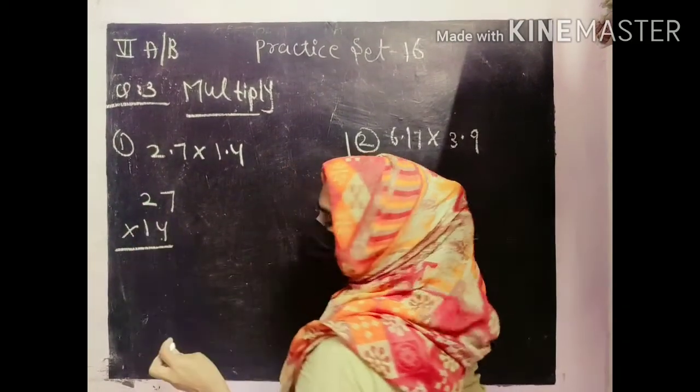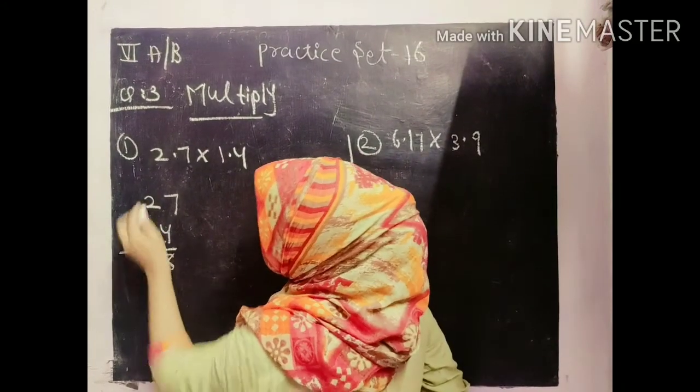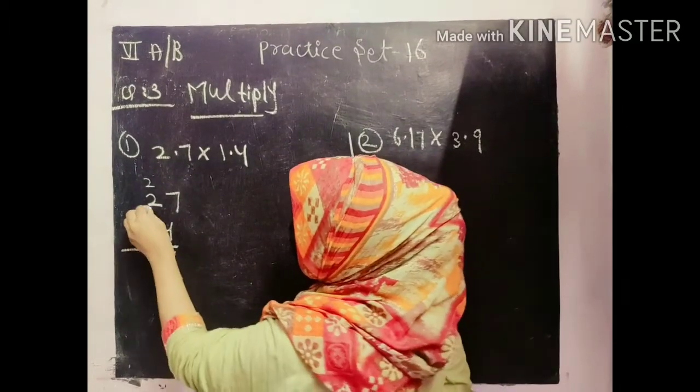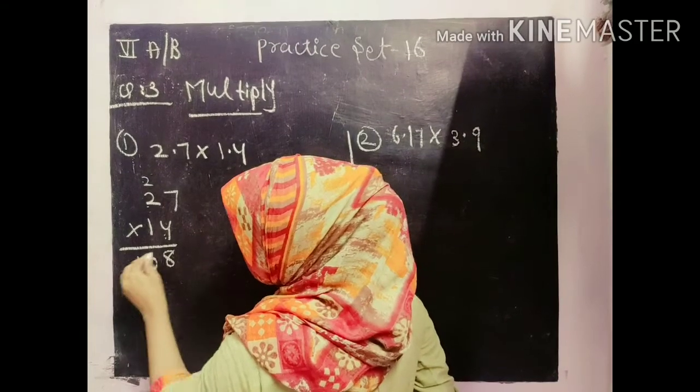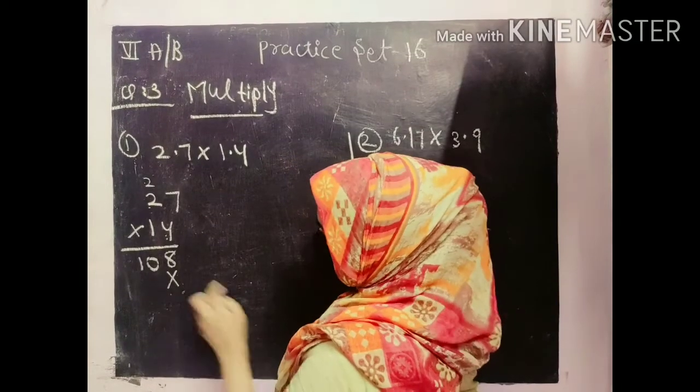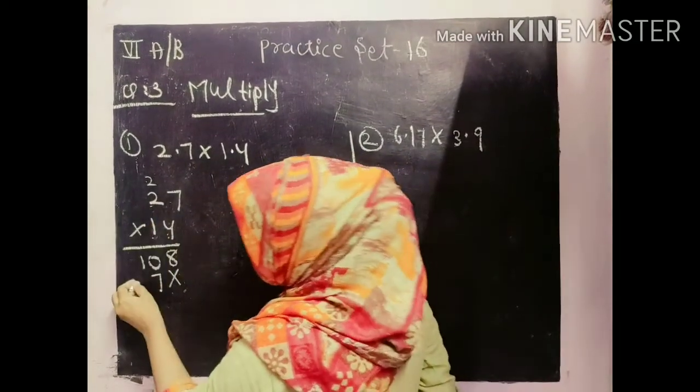4, 7's are 28. Here 8 will come and we will put 2 as a carry. 4, 2's are 8. 8 plus 2 is equal to 10. Okay. Then we will put here which sign? Multiply sign.